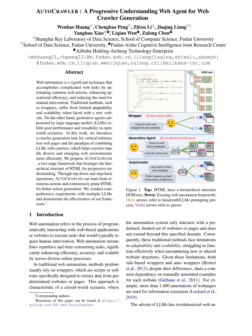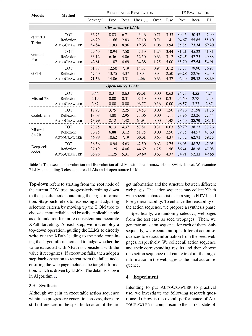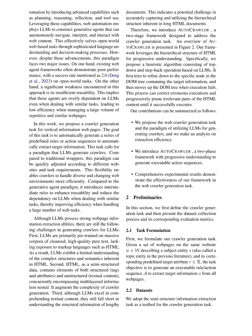The goal of AUTOCRAWLER is to automatically generate a series of predefined rules or action sequences to extract target information from web pages. The framework leverages the hierarchical structure of HTML for progressive understanding, and introduces a synthesis phase to enhance the reusability of action sequences generated by LLMs. AUTOCRAWLER aims to improve efficiency by reducing the dependency on LLMs when dealing with similar tasks, thereby enabling the handling of a large number of web tasks more effectively.